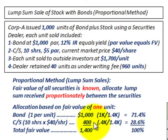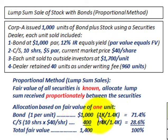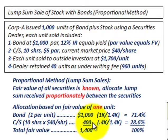For the common stock, that's $400 divided by $1,400 — 0.4 divided by 1.4 — which equals 28.6%. So we've allocated our unit proportionately based on the fair value assigned to the bond and the fair value assigned to the common stock. Total allocation here is 100%.